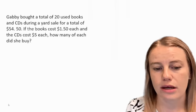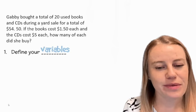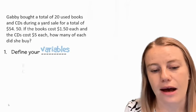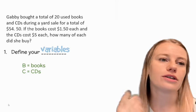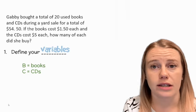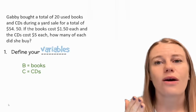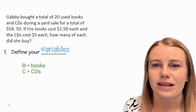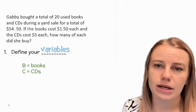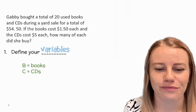Step one was to define your variables. I'm going to choose easy things—you can use x and y, you can use anything random, just as long as you define it. You have to write it down. I'm going to use B for books and C for CDs.